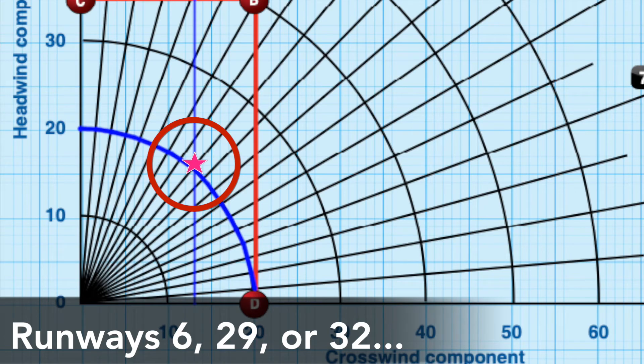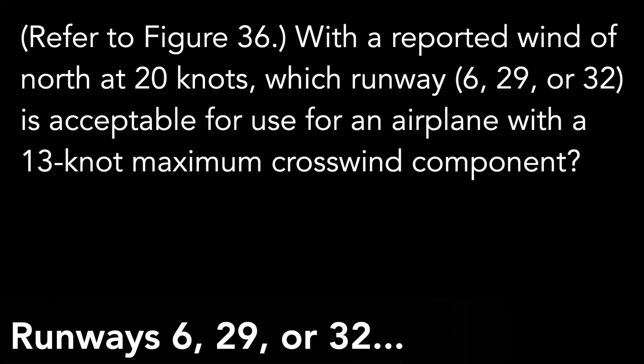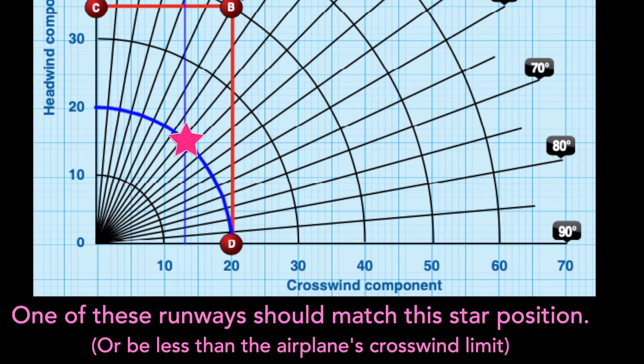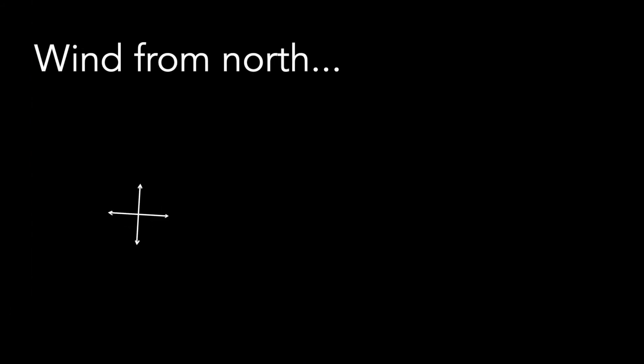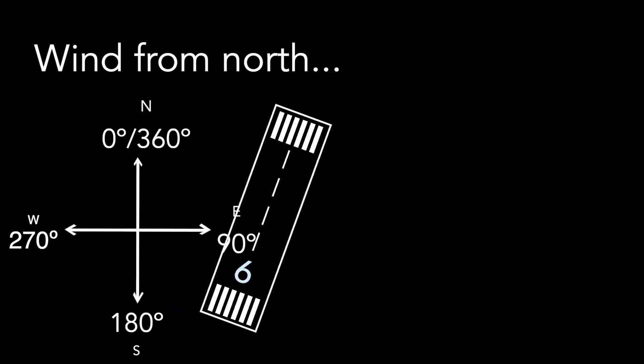What are we supposed to do with all these runways and how do we pick the correct one? We need to take these given runways and find the angle of difference between that particular runway and the direction this wind is coming from. In this case, north. One of these angles should bring a match to this particular point we just made. We have the wind coming from the north, which is zero degrees or 360 degrees - they are the same thing.